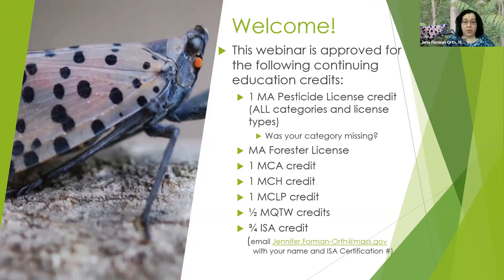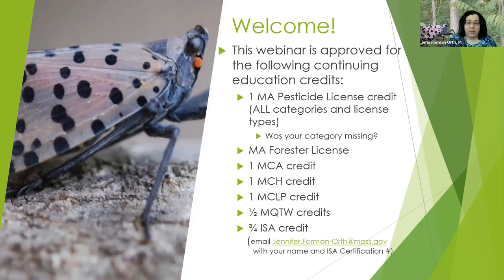You can email me with your full name, your license number, and the category. If you already registered and put that information in, you don't need to email me. It's already collected by the Zoom system, so don't worry about that. We're also approved for Mass Forester license credits, MCA credits, MCH credits, MCLP credits, MQTW credits, and ISA credits. If you don't know what any of those acronyms are, they probably don't apply to you.